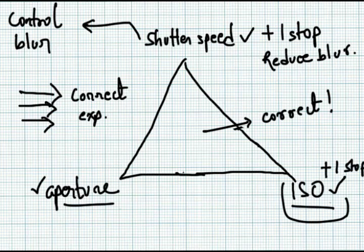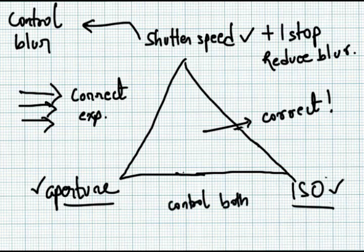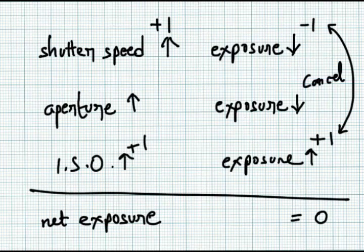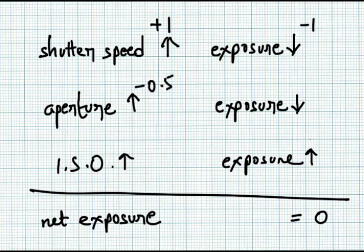In fact, you can change both aperture and ISO without changing the exposure in a wide variety of ways. For example, you can decrease aperture by 0.5 and increase ISO by 0.5, and your net exposure will still remain same.